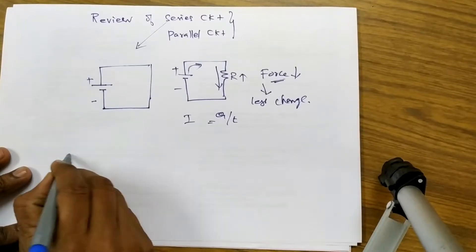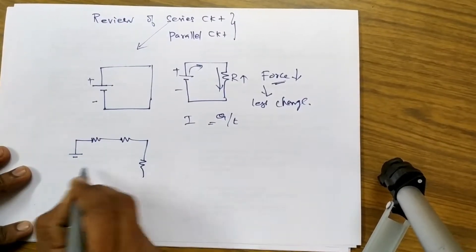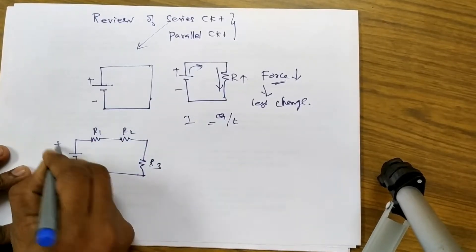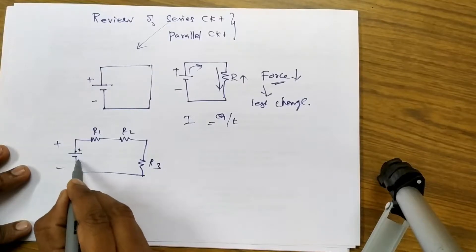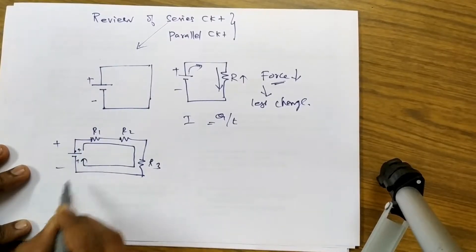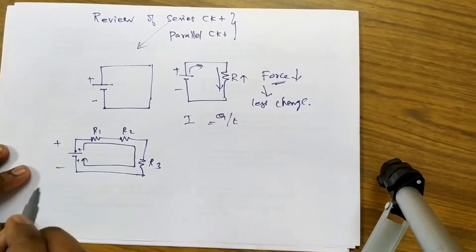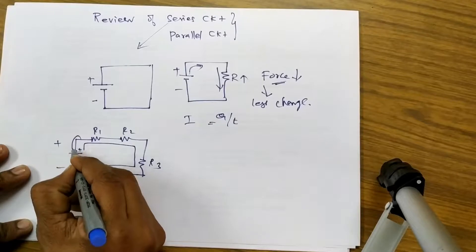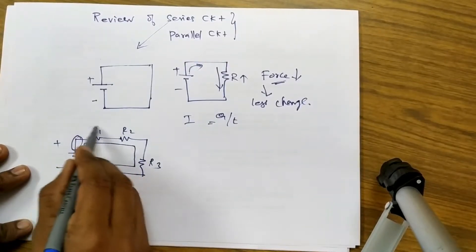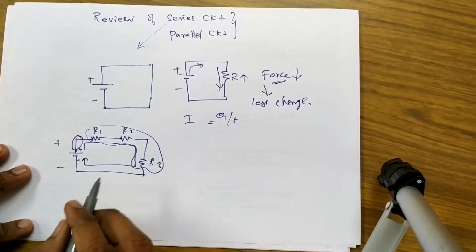So if I have a series circuit like this, let us assume that there are three resistors. Then the force between the positive terminal and negative terminal will go through all three resistors. What happens in the series circuit is that the charges starting from the positive terminal of the battery are reduced because of these three resistors present in the path.